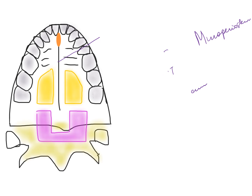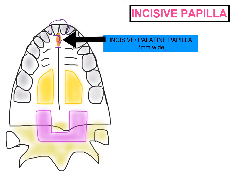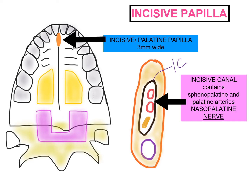Another structure in the hard palate is called the incisive papilla. It is an oval-shaped structure located at the midline, also called the palatine papilla, and is about three millimeters wide. Inside this papilla is the incisive canal, which may contain the sphenopalatine and palatine arteries and the nasopalatine nerve. The incisive canal connects the nasal cavity to the oral cavity.